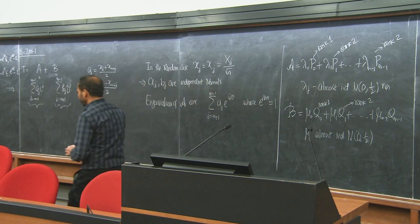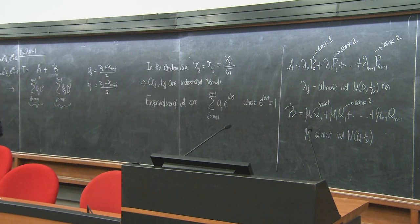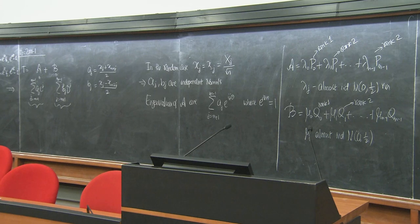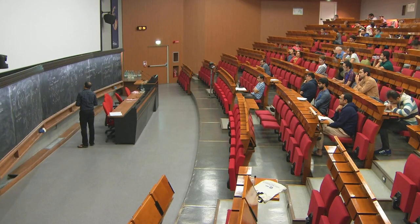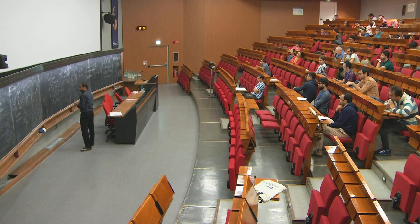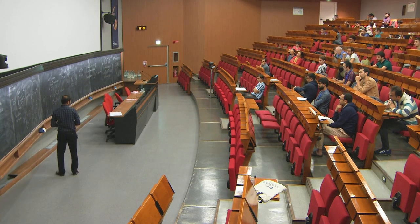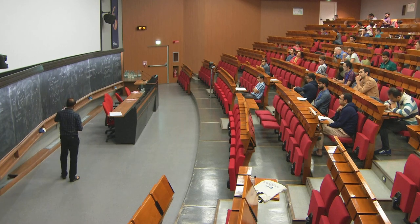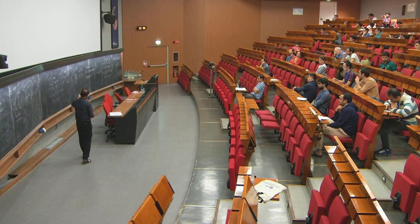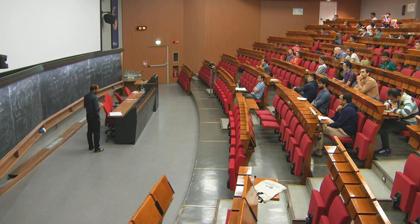From this it is obvious that the limiting spectral distribution of A and B are normal(0, 1/2). The Hankel case is similar and in the interest of time I won't write it now. This is step 1: the Toeplitz matrix has been written as a sum of two completely understandable independent random matrices.